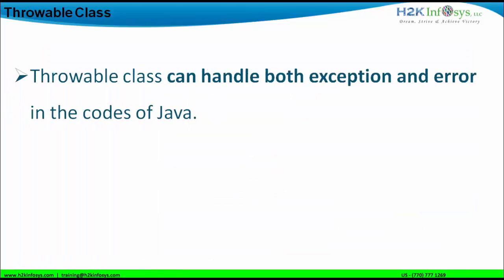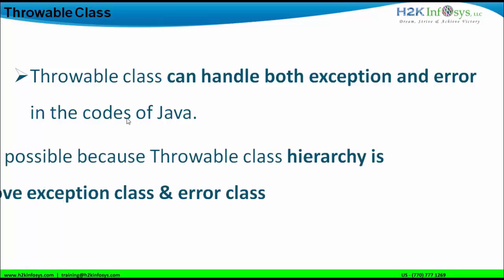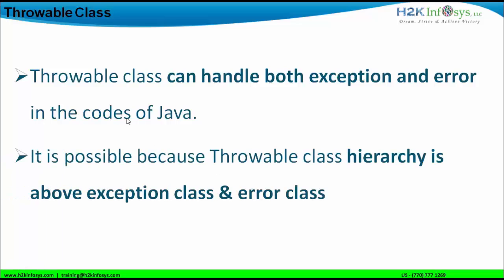The throwable class handles both exceptions and errors in Java code because it is higher up in the hierarchy and is inherited by both the error class and the exception class. That is why if you have an error or an exception, it can be handled by the throwable class — its hierarchy is above both exception and error class.